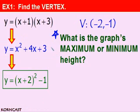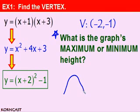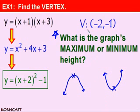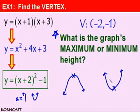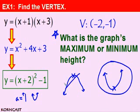Before we continue to the next example, I want to bring your attention to one of the most often asked questions with quadratic equations: what is the graph's maximum or minimum height? The parabola's U-shape always gives the graph a maximum or minimum value, and that value always occurs at the vertex. In this case, we have a vertex at (−2, −1), and by inspection we have an a value of 1, so the graph points up because a is positive. Therefore our graph has a minimum value, not a maximum, occurring at the vertex.